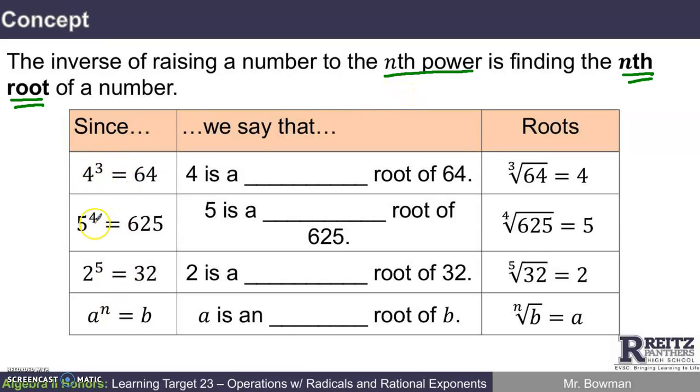So here are some examples of the concept. Since 4 to the 3rd power is 64, we would say that 4 is a third root of 64. The term we actually often use for the third root is the cube root. And here's the way we would write that: The cube root of 64 is 4. So these expressions here are the inverse ideas of this expression here.